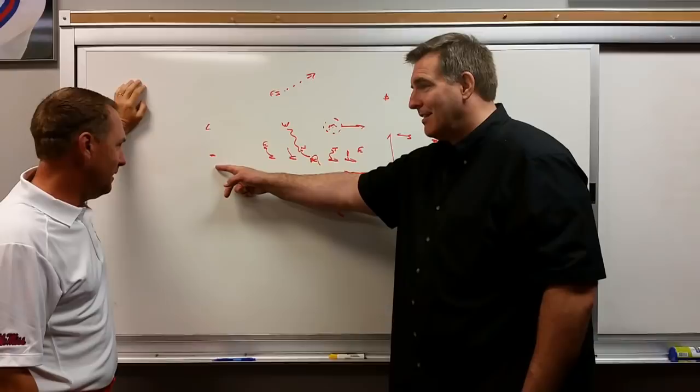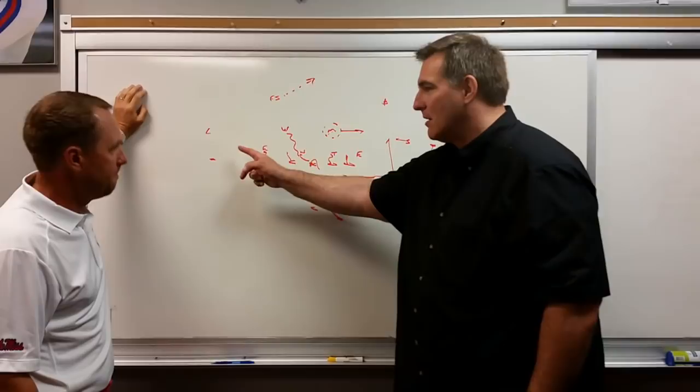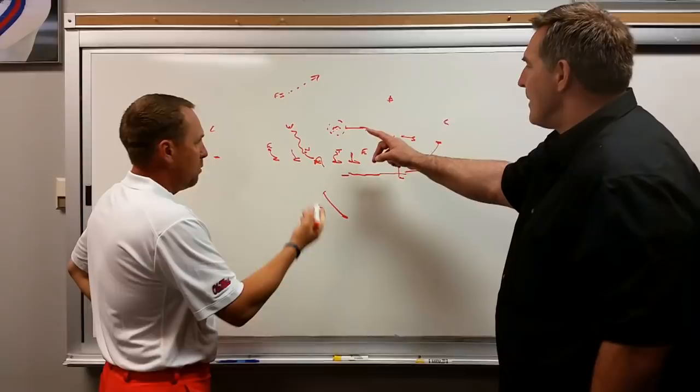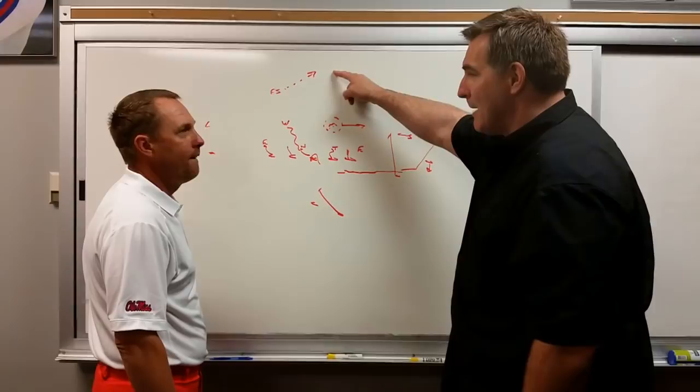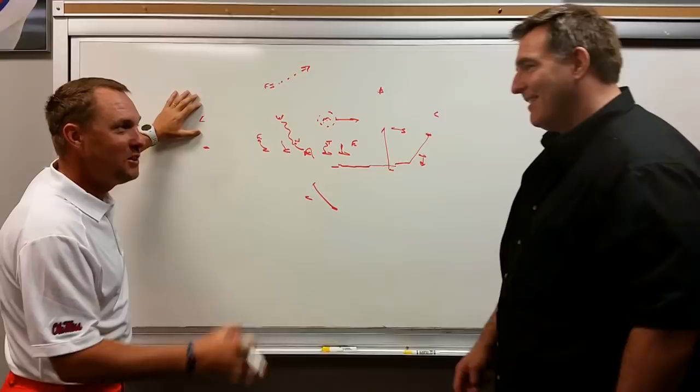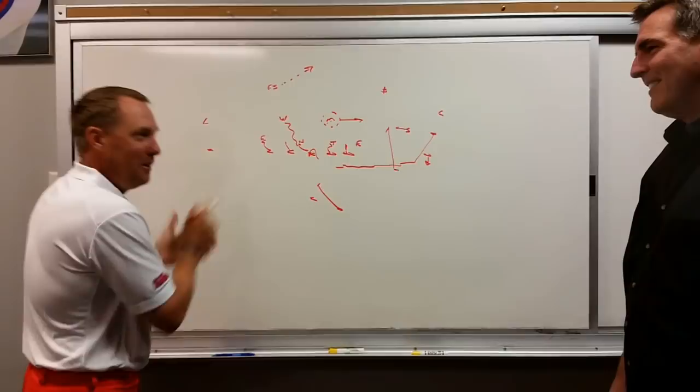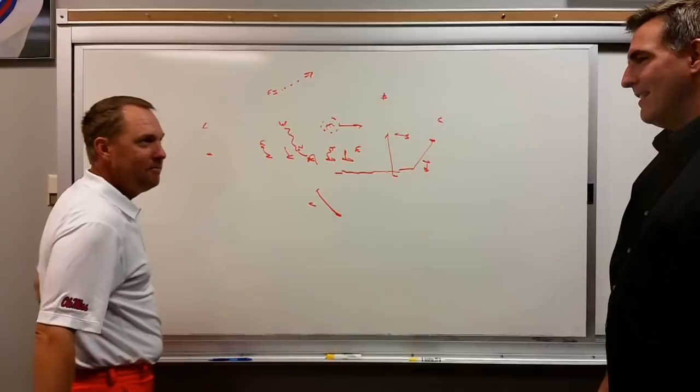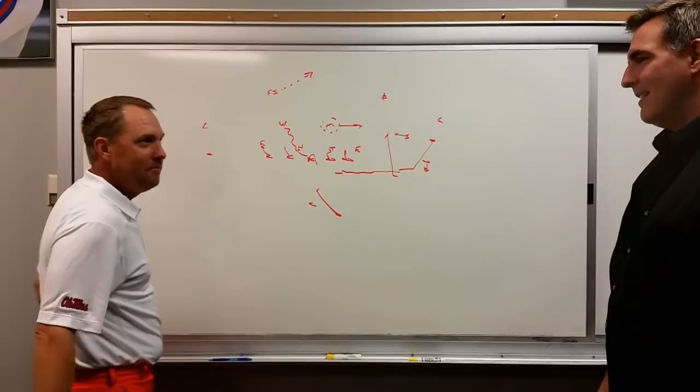That receiver is LaQuan Treadwell, someone who can win one-on-one. If the defense keeps the safety back to protect against that corner matchup, then the Mike is in a bind with help on one side. That's the quarterback's read: if they help by bringing the safety up, he goes back to the middle and that receiver is in a bind. There are people in this league who'd argue that player can still win, but on the board that's the bind the offense has created for the defense.